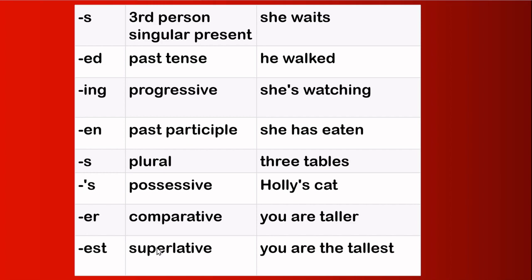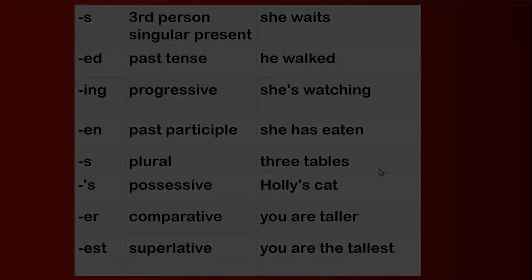Inflection means change in a word to show a grammatical purpose and not to get a new word. When you get a new word, it is derivation. For example, 'eat' — you add -er to get 'eater,' meaning one who eats — that is a different word. So the same -er suffix used for the comparative form has been used in 'eater' to get a derivation.